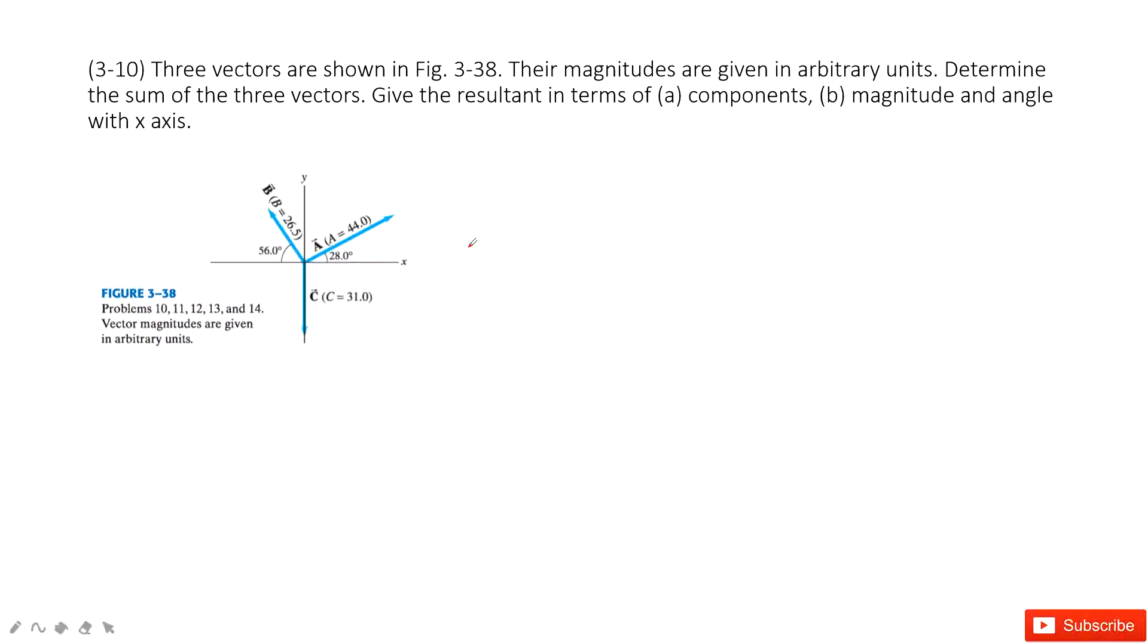In this problem, we know three vectors in this picture. We need to find the magnitude and direction for the sum of these three vectors. When we want to do addition for the three vectors, we add these three vectors together.